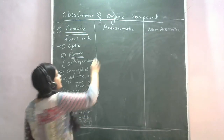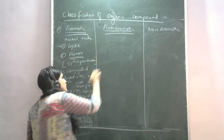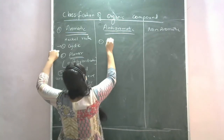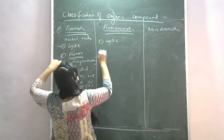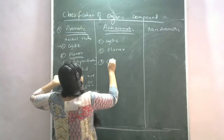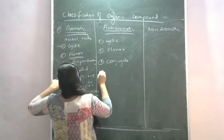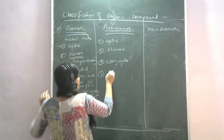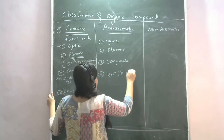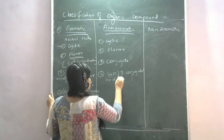Next is anti-aromatic. Anti-aromatic compounds also follow Huckel's rule conditions — except the last condition. Anti-aromatic compounds are also cyclic, also planar, and also show a complete conjugated system. The fourth condition is that they have 4N pi delocalized electrons.